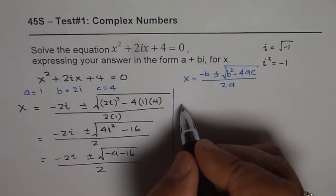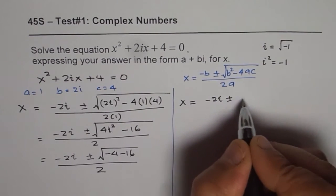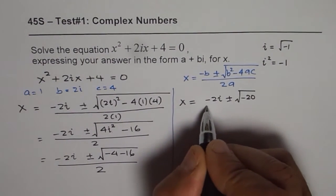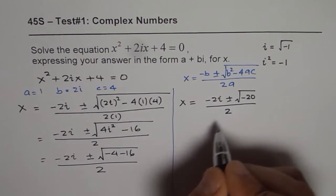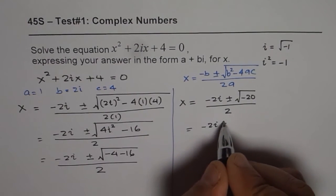So we can write x as equal to minus 2i plus or minus square root of minus 20 divided by 2. Now let's see how to solve the radical parts.